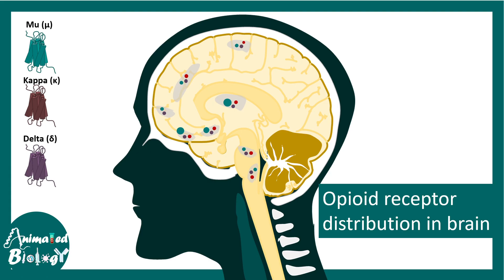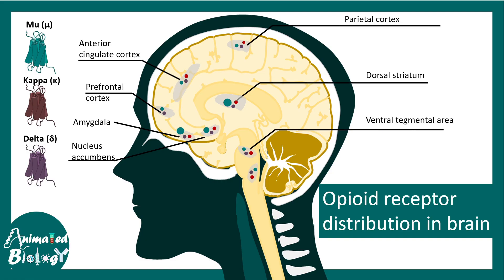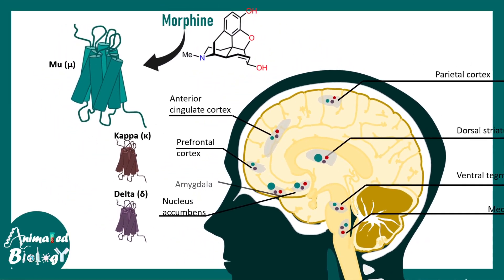This overall modulates how neurons are firing in our body. Looking at the brain, mu opioid receptors, kappa opioid receptors, and delta receptors — which are all receptors for different types of opioids — are distributed all over the brain, including the anterior cingulate cortex, prefrontal cortex, amygdala, nucleus accumbens, parietal cortex, dorsal striatum, ventral tegmental area, medulla, and many other places in the central nervous system.